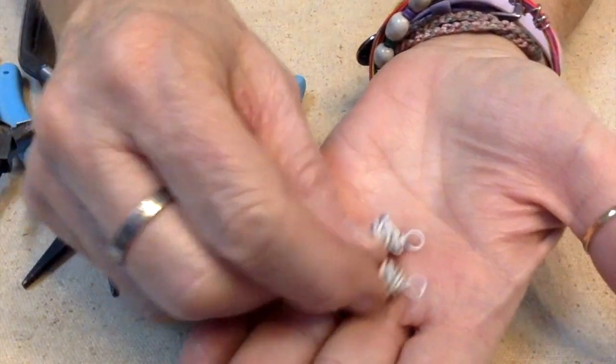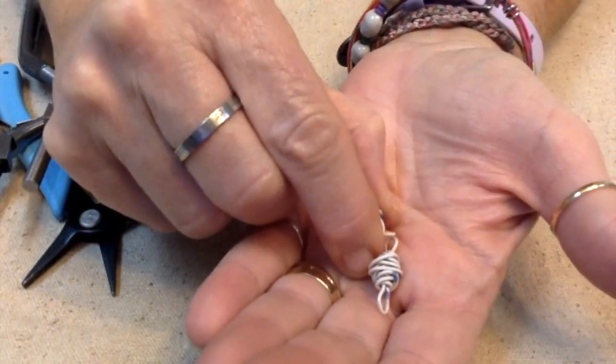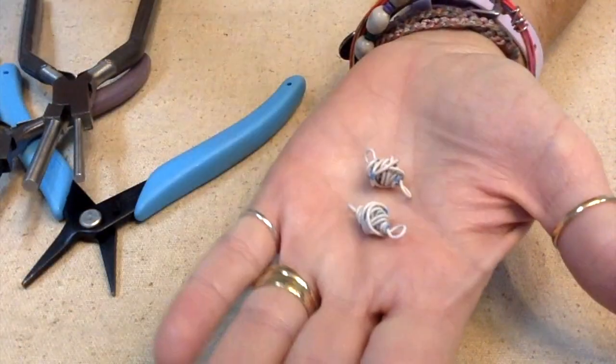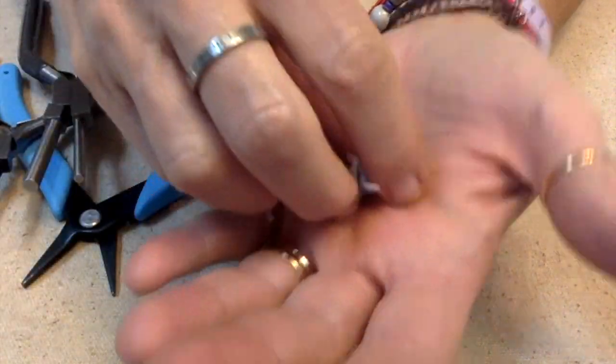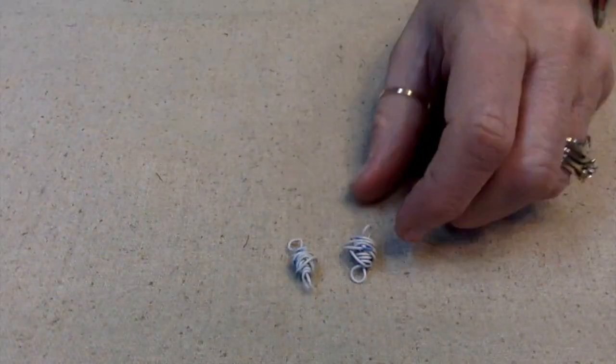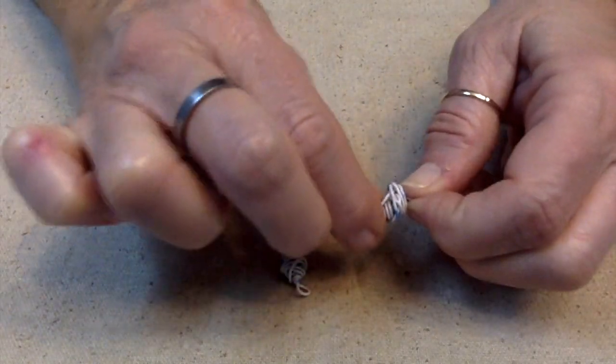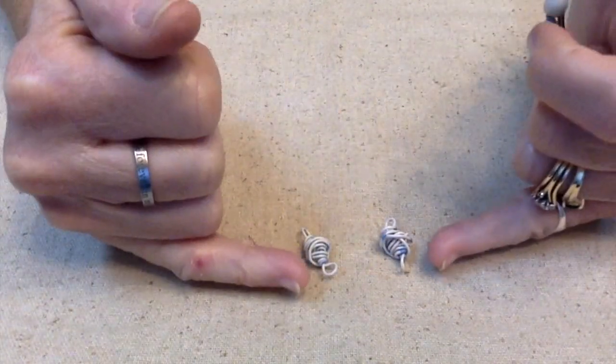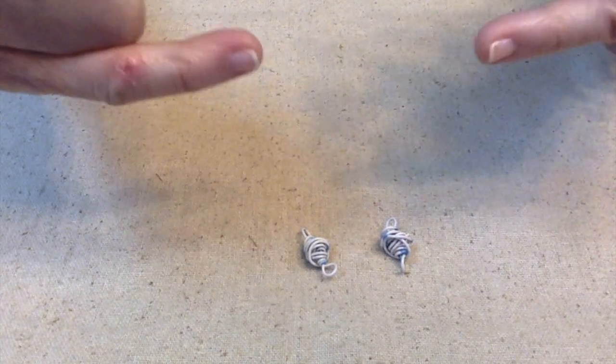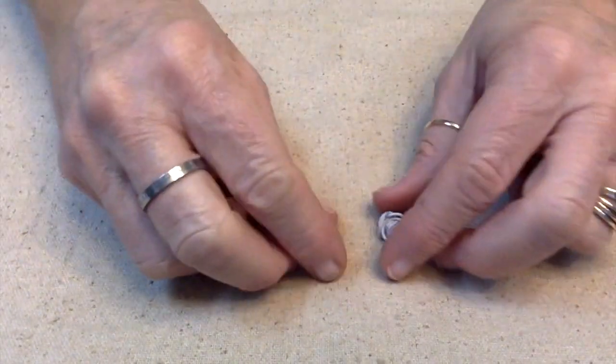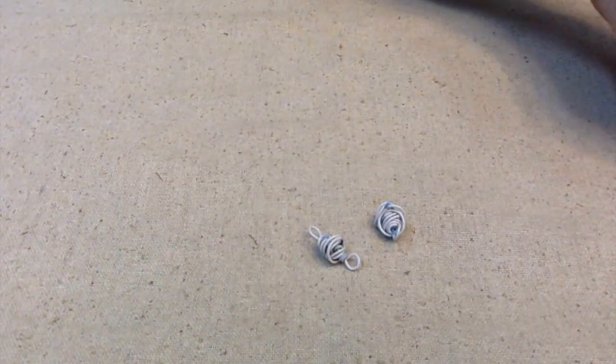So I went ahead and I made two of them, and remember you are not a machine, so they're going to be slightly different because they are handmade. But now that I got the forms already, I'm going to hang ear wires on one end and then dangles on the other. So we got to figure out the dangles.